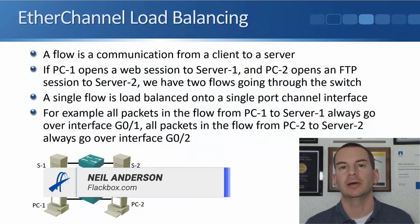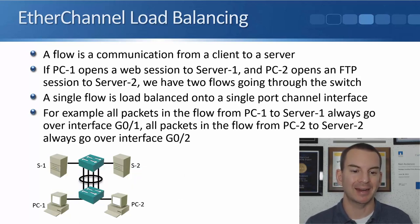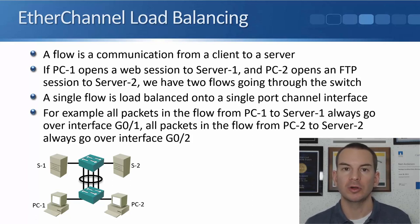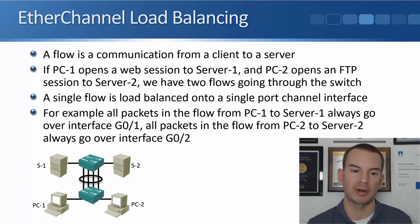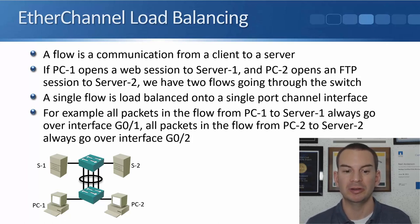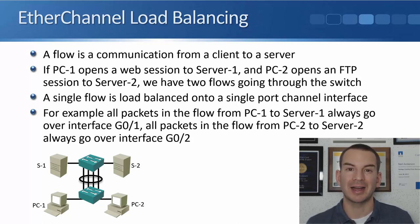In this lecture you'll learn about how EtherChannel load balancing works, using the diagram on the slide. There are two switches with four links grouped into an EtherChannel, each a gigabit Ethernet interface, starting with GigabitEthernet 0/1 through 0/4. In the bottom switch there are PC1 and PC2, and in the top switch there are Server 1 and Server 2.